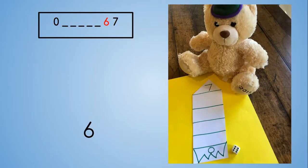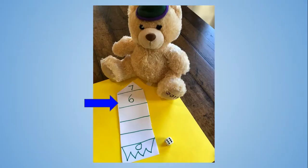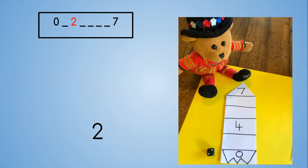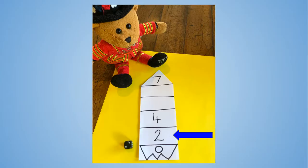Wimbledon Bear's thrown a 6. He knows that 6 comes just before 7, so he's written 6 at the top of his rocket under the 7. Ted Bear's thrown a 2. 2 is at the bottom of the rocket, closer to 0. He's found a space between the 0 and the 4 to write the number 2.